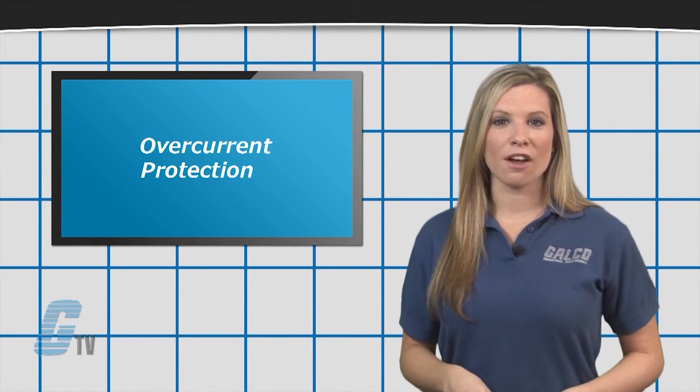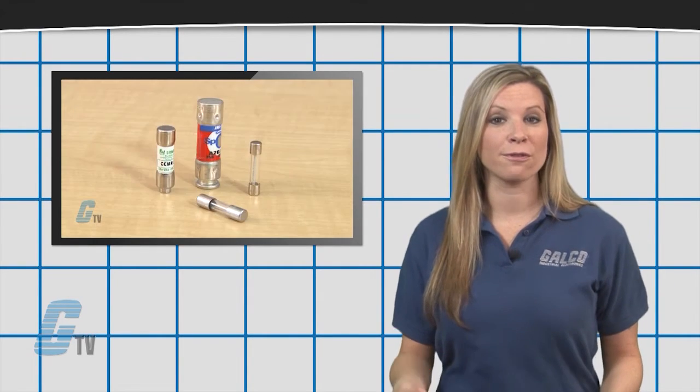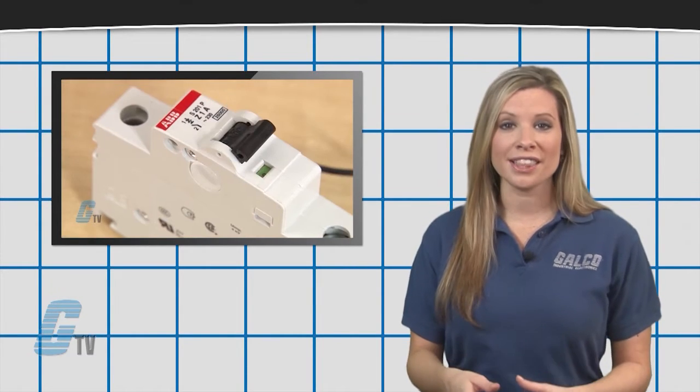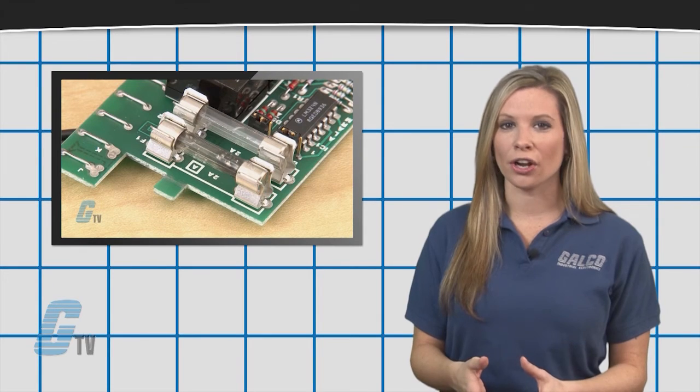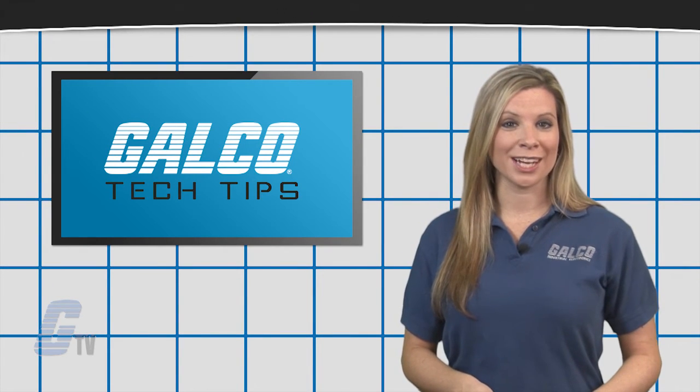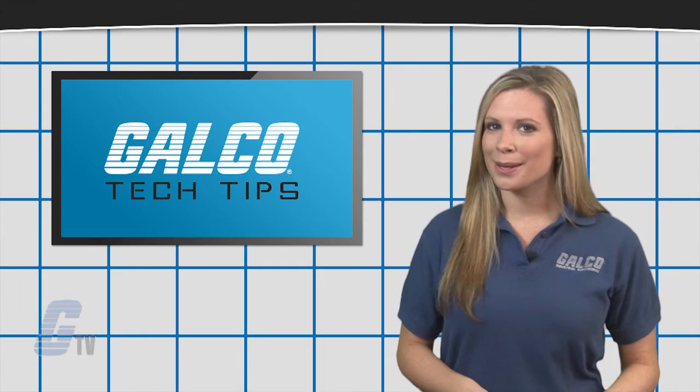Common sources of protection are circuit breakers and fuses. These devices use internal technology to break the circuit and dissipate the arc before it can cause harm. To find out more about circuit protection, make sure you check out our other videos on GTV.